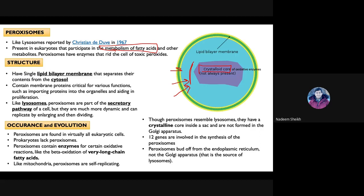There are around 12 genes involved in the synthesis of peroxisomes — some proteins are part of the membrane and some enzymes are present within the organelle. As far as their evolution and occurrence is concerned, peroxisomes are found in virtually every type of eukaryotic cell but are not found in prokaryotic cells.